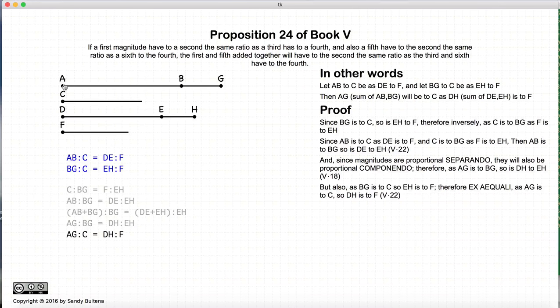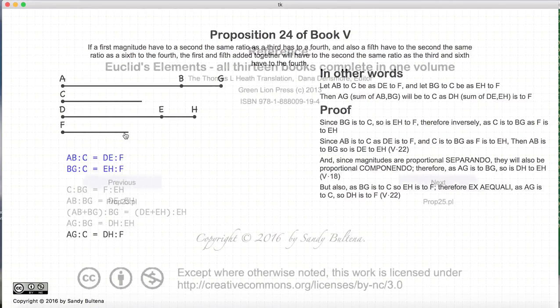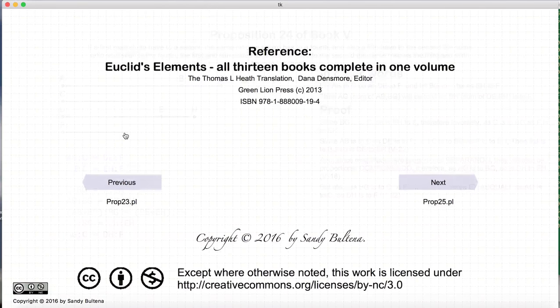And finally, we have that the line AG to C is equal to DH to F. And that concludes this video presentation. To see the next presentation, just click the Next button.